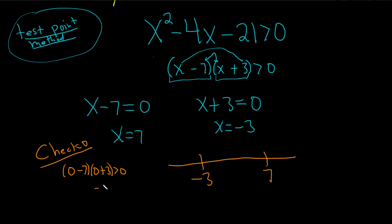So we get negative 7 times 3, so negative 21. Is that greater than 0? No, it's not. So it's false. So because we pick 0 from here and it's false, the trick is you shade in the other spots.